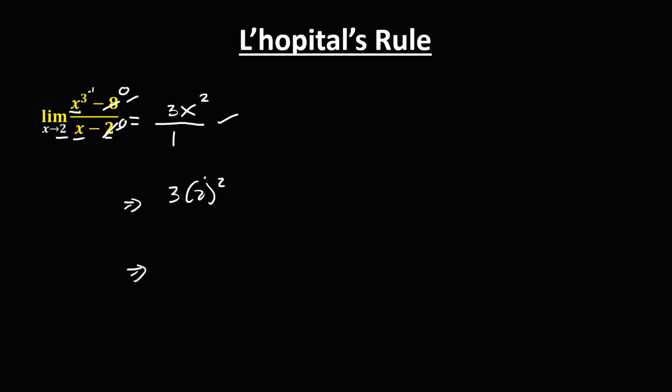Simplifying: 3 times 2 to the power 2 — 2 squared is 4, and 4 times 3 is 12. So the limit is equal to positive 12.